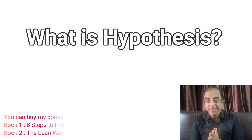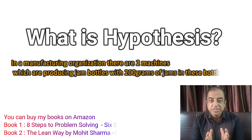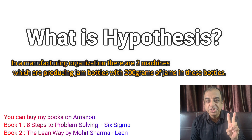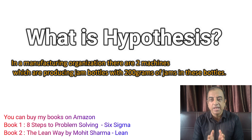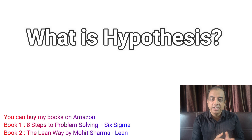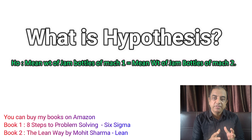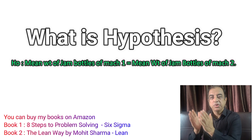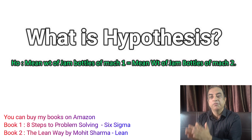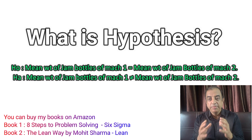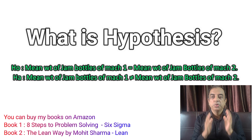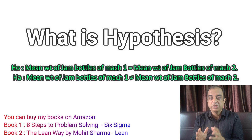Let us take an example to understand this better. In a manufacturing organization there are two machines producing jam bottles with 200 grams of jam. The null hypothesis is that the machines are producing the same weight of jam bottles — meaning the mean weight of machine one equals the mean weight of machine two. The alternate hypothesis is that the mean weight of machine one is not equal to the mean weight of machine two.